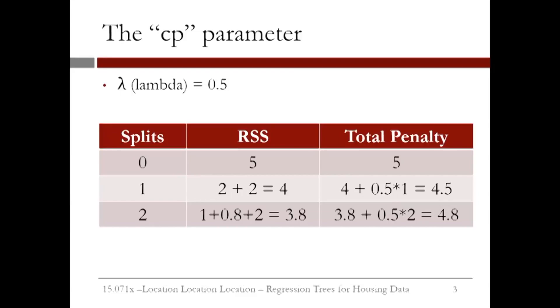If we split again on one of our leaves, we now have a total of 3 leaves for two splits. The error at our leftmost leaf is 1, the next leaf has an error of 0.8, and the next leaf has an error of 2 for a total error of 3.8. The total penalty is thus 3.8 plus 0.5 times 2 for a total penalty of 4.8.